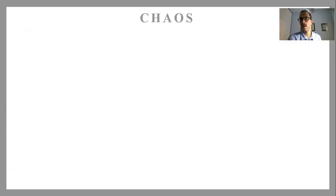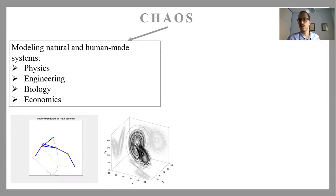Now, first of all, chaos is a very big topic, a very large scientific field. It's been around for around 60 years. It covers, of course, a lot of modeling of physical and human-made systems in physics, engineering, biology, economics, and many more.